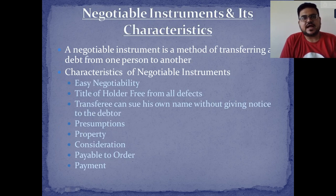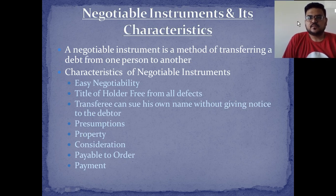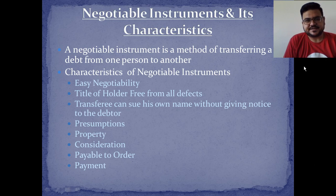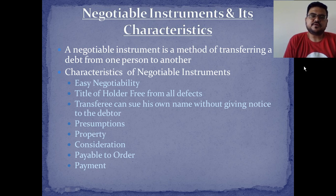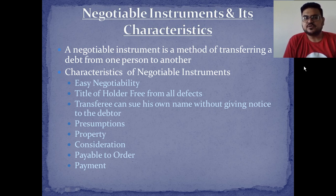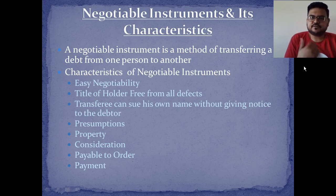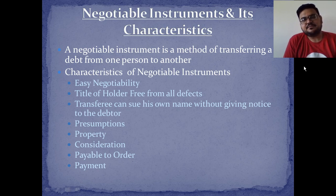A negotiable instrument is a method of transferring a debt from one person to another. If you want to do a transaction and give money to someone, you can use negotiable instruments instead of giving cash. This is the method by which you can get rid of a debt — if you have to pay someone, you can pay using a negotiable instrument.